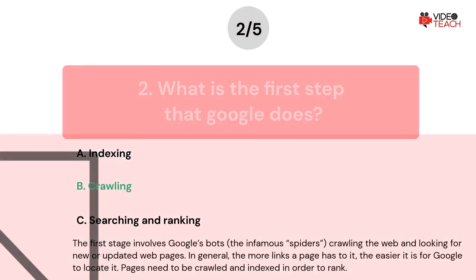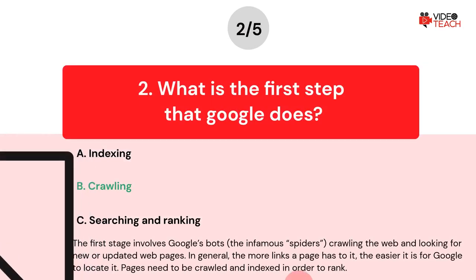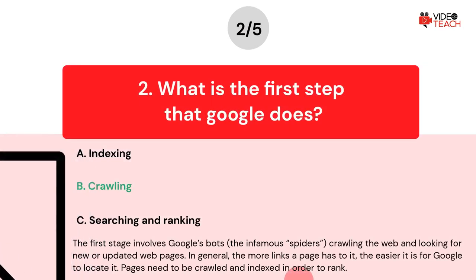The correct answer is Option B: Crawling. The first stage involves Google's bots, the infamous spiders, crawling the web and looking for new or updated web pages. In general, the more links a page has to it, the easier it is for Google to locate it. Pages need to be crawled and indexed in order to rank.